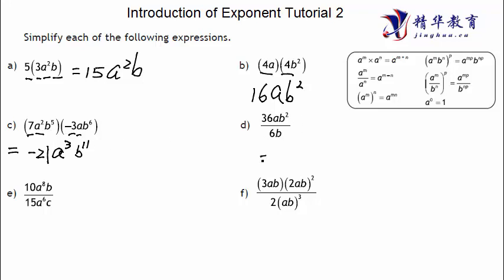Again, constant divided by constant: 36 divided by 6 is 6. A divided by nothing, so it stays as A. B squared divided by B to the first — power divided by power equals power subtracted — B 2 minus 1, which is B to the power of 1. So the result is 6AB.